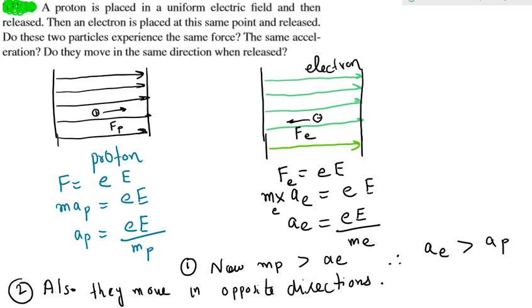In the second case, the electron experiences the same force, but the mass is different, so therefore acceleration of the electron will come out to be eE upon m_e.